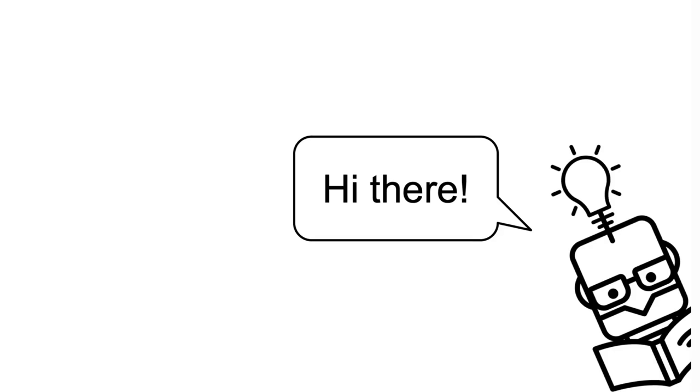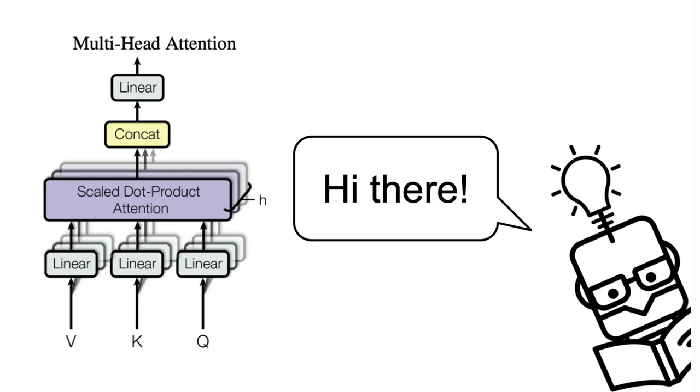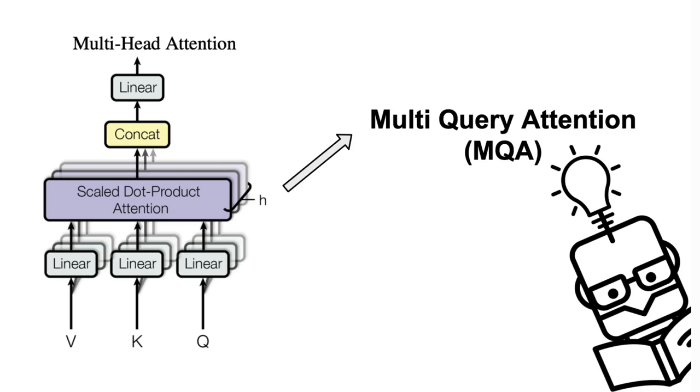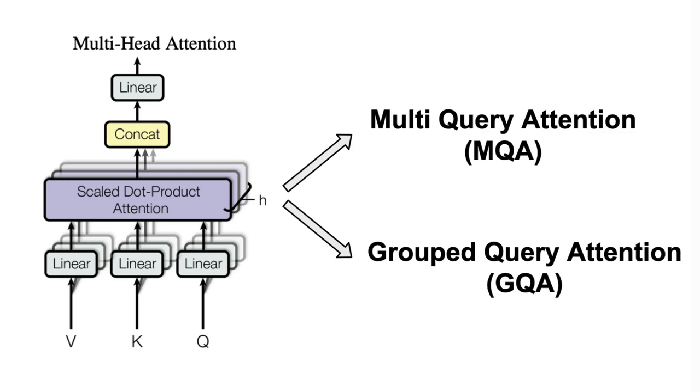Hi everyone, and welcome back to my channel. In this video, we are going to cover a recap of the multi-head attention and its drawbacks that happen when you use it in incremental inference. And then, we'll go over two variants of multi-head attention, the multi-query attention, or MQA, and the grouped query attention, or GQA.